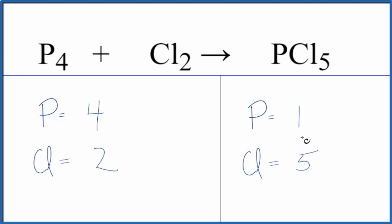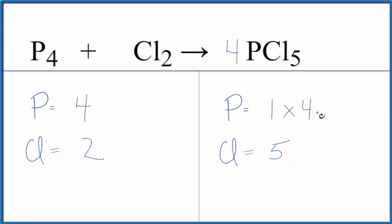It looks like if we multiply the PCl5 by four, that'll accomplish two things. First of all, one times four, that'll give us four. So that'll balance the phosphorus atoms.